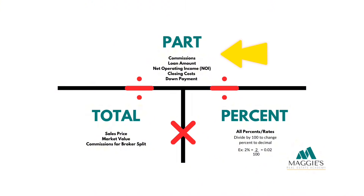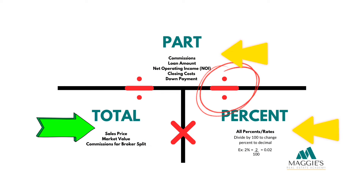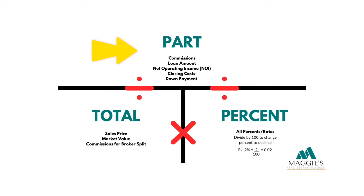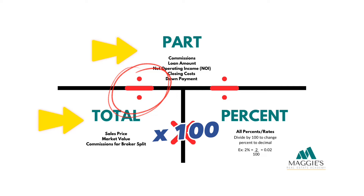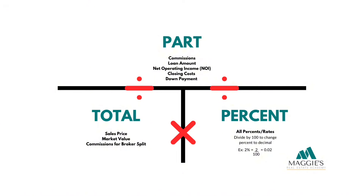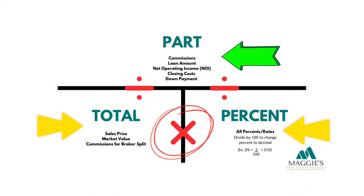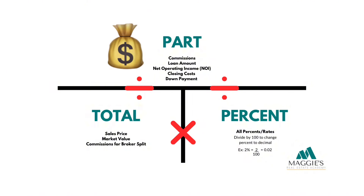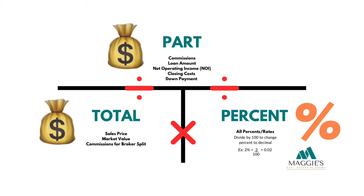If you're given a part and a rate, you will divide to get the total amount. If you're given a part and a total, you will also divide, then multiply by 100 to get the rate or percent amount. If you're given a total and a rate, you will multiply to find the portion or the part. Remember that the part and the total are in dollar amounts and the rate is always a percent.